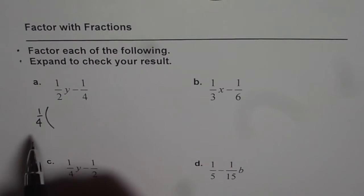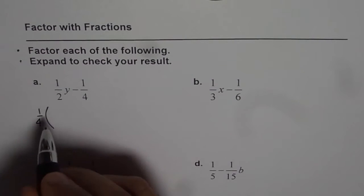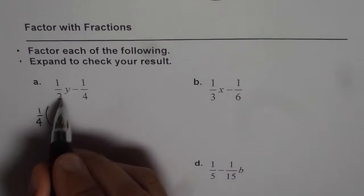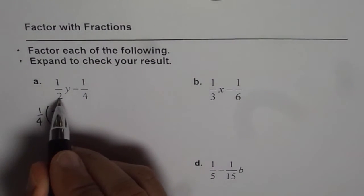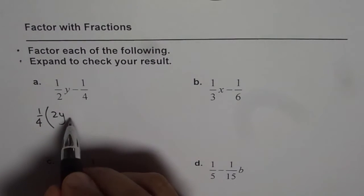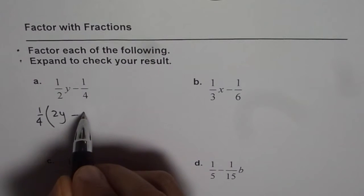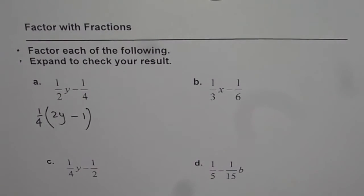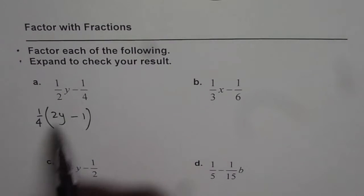The first term, if I multiply by four, I get 2y. Four divided by two is two. The second term, if I multiply by four, I get one, so I get minus one. That is how we get our result: 1/4(2y - 1).